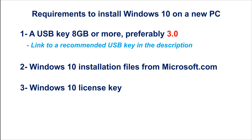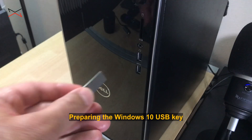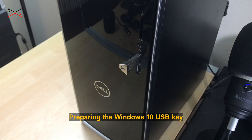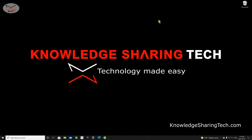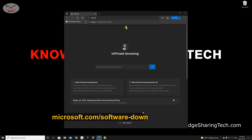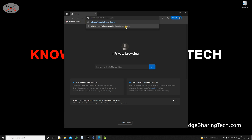The license can be either a key that you purchase from Microsoft or from any other vendor, or it can also be a digital license — I'm gonna show you how to activate Windows towards the end of the video. The fourth thing you need is a Windows 10 PC to perform all these operations on. So let's start. First, insert the USB key in your Windows 10 PC. Then open your web browser and go to microsoft.com